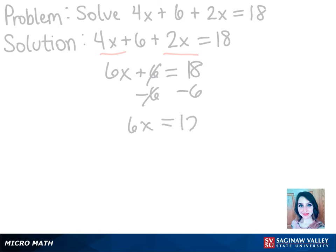We still want x to be completely by itself now, so we've got to get rid of that coefficient 6. We'll divide both sides by 6 so that those cancel. And then we're left with x equals 2, and that is our solution.